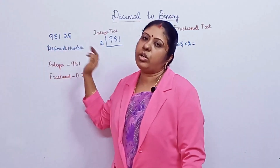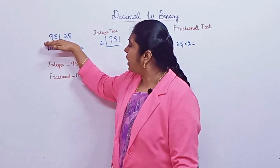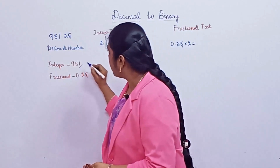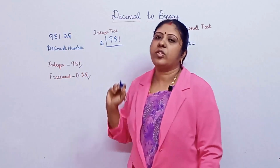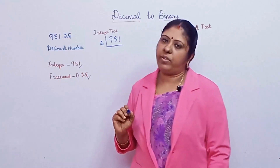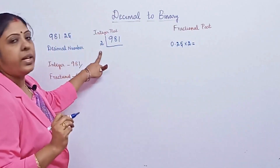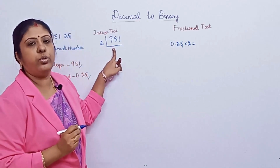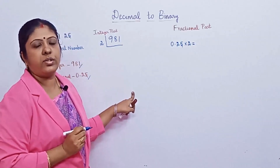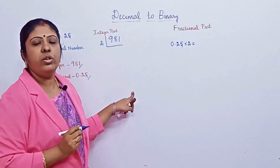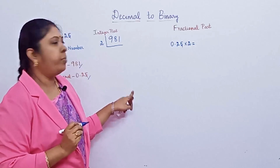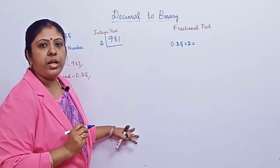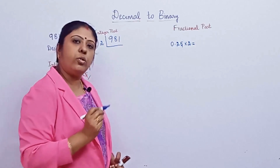Consider the example 981.25 — this is the given decimal number we want to convert to binary. Here, 981 is considered the integer part and 0.25 is the fractional part. We will solve the integer part first, then explain the fractional part. The base idea is to continuously divide the decimal number by two until it reaches a minimum value of zero or one, noting the remainders, then writing the binary number from bottom to top.